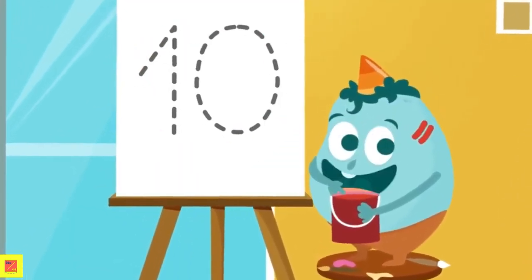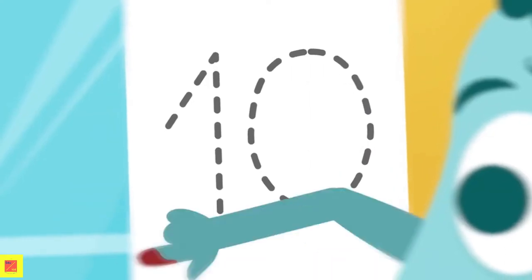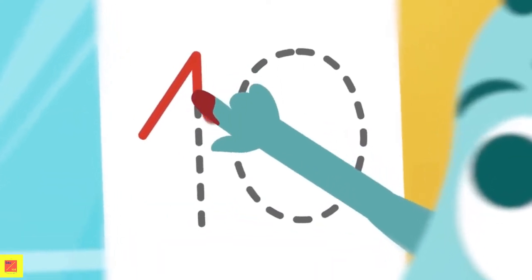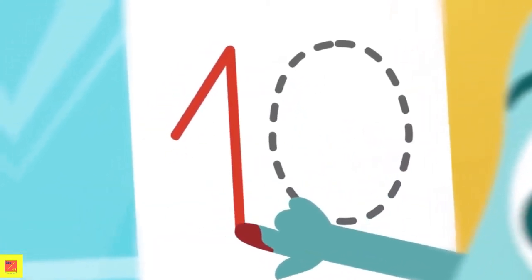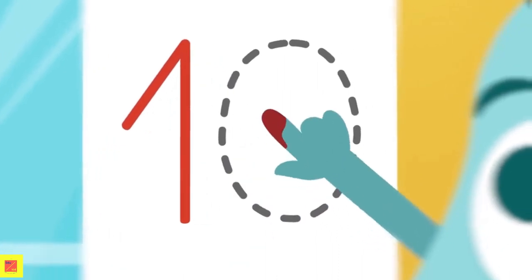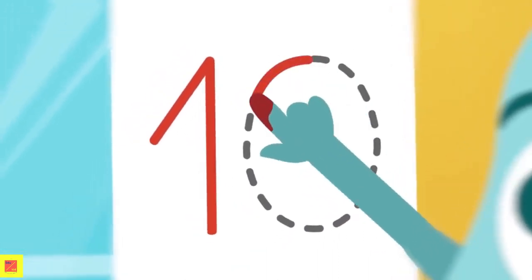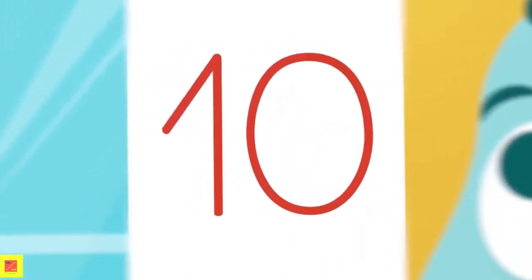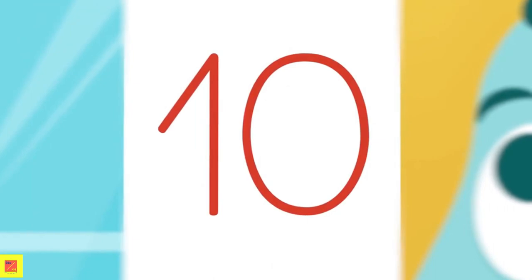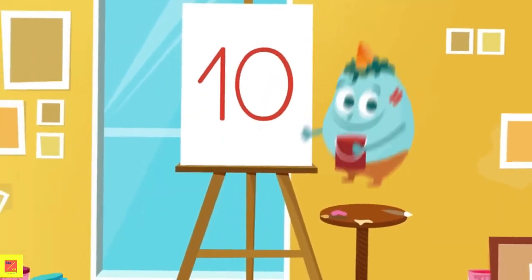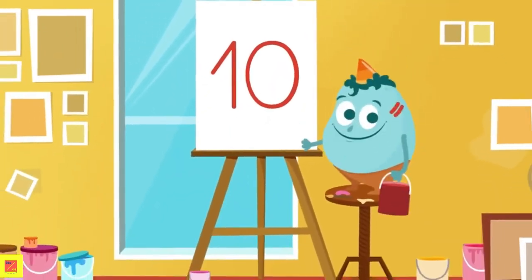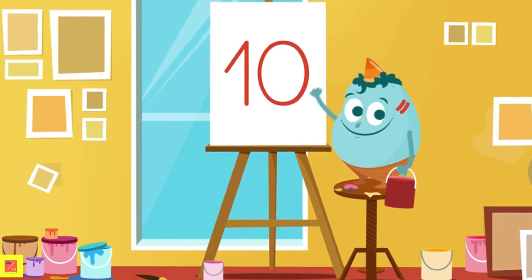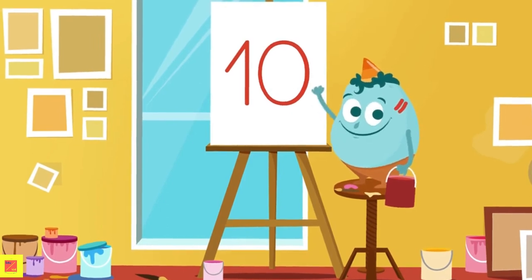And for the last one, we make a 1 like we did before, but then we add a 0 to the right. We start here and we make a circle. What number is this? Number 10. Perfect. Yay! Well done. Now you can write the numbers. See you later.